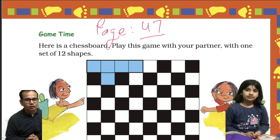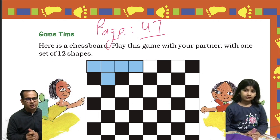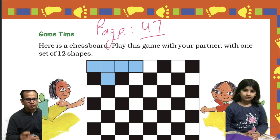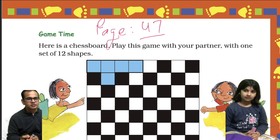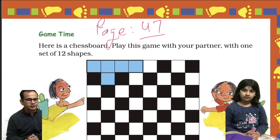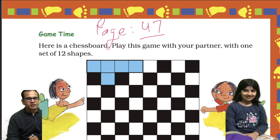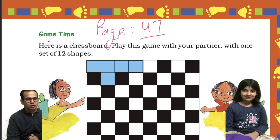Welcome back to this channel. Today we will be studying page number 47 of Chapter 3 of the NCERT book Mathematics Class 5. Page number 47 is talking about 'Game Time' — here is a chessboard.